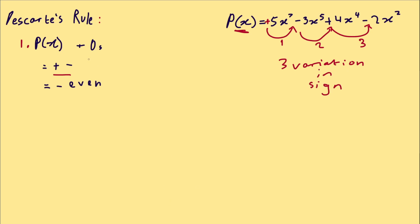So how many positive real zeros would I have? Well, it would be either three or three minus an even number. So that could be one. So there's either three or one positive real zeros in this polynomial.